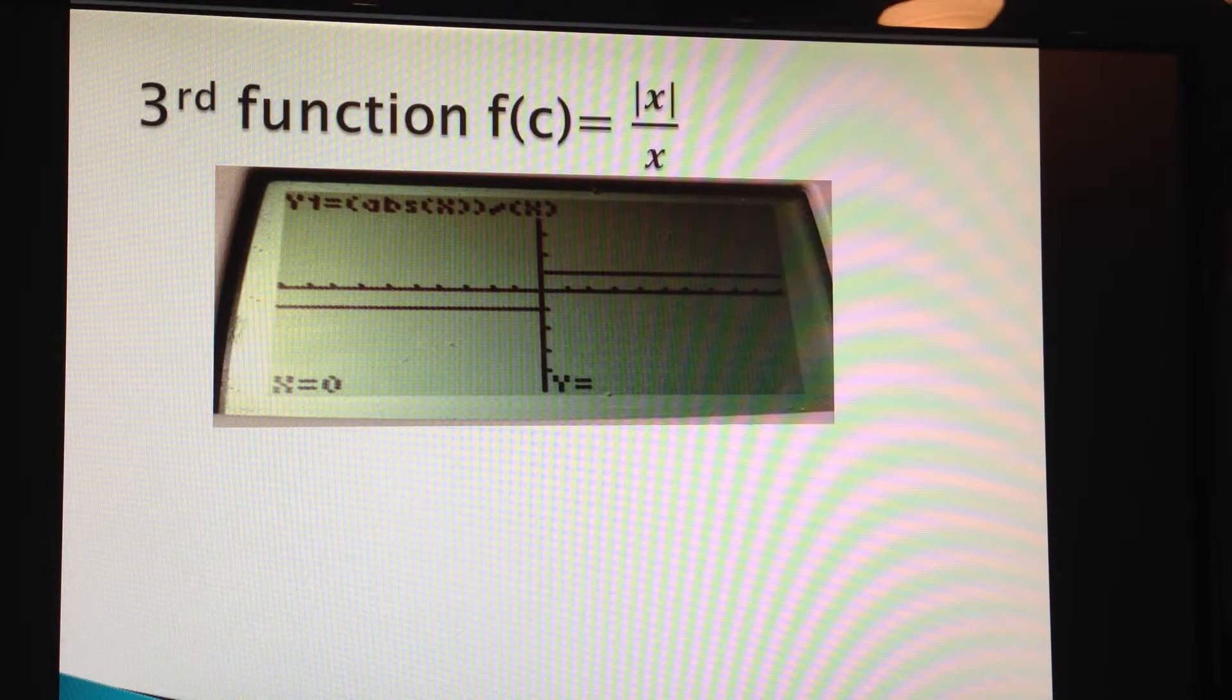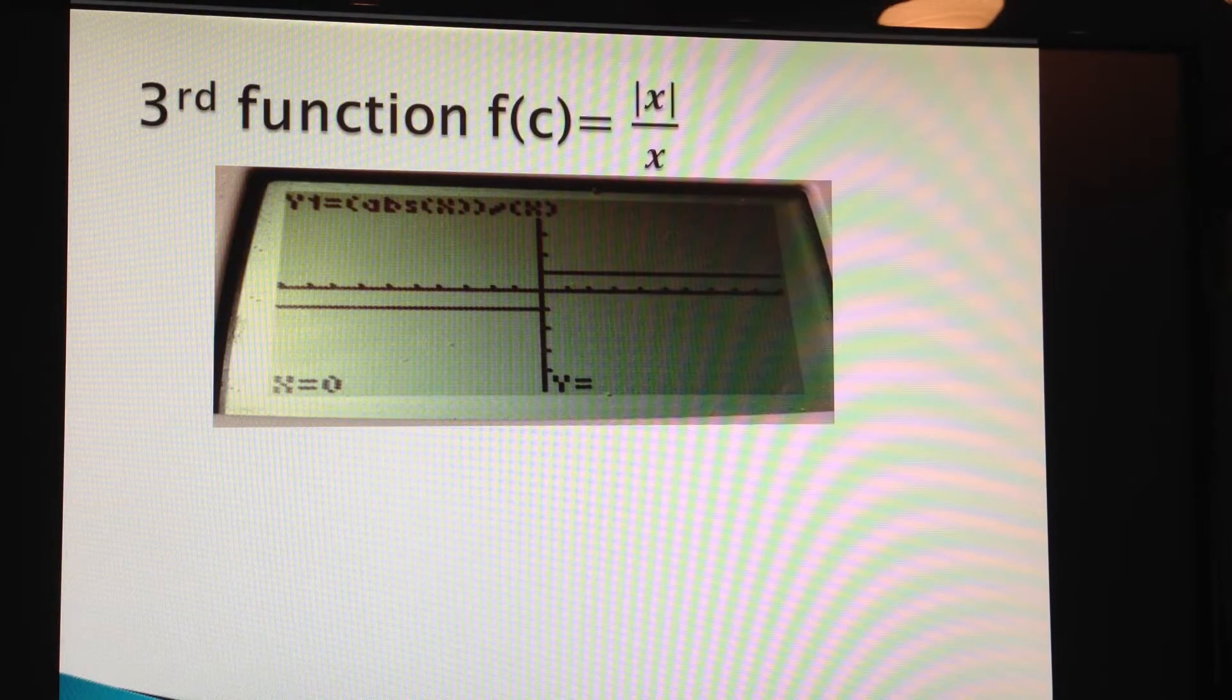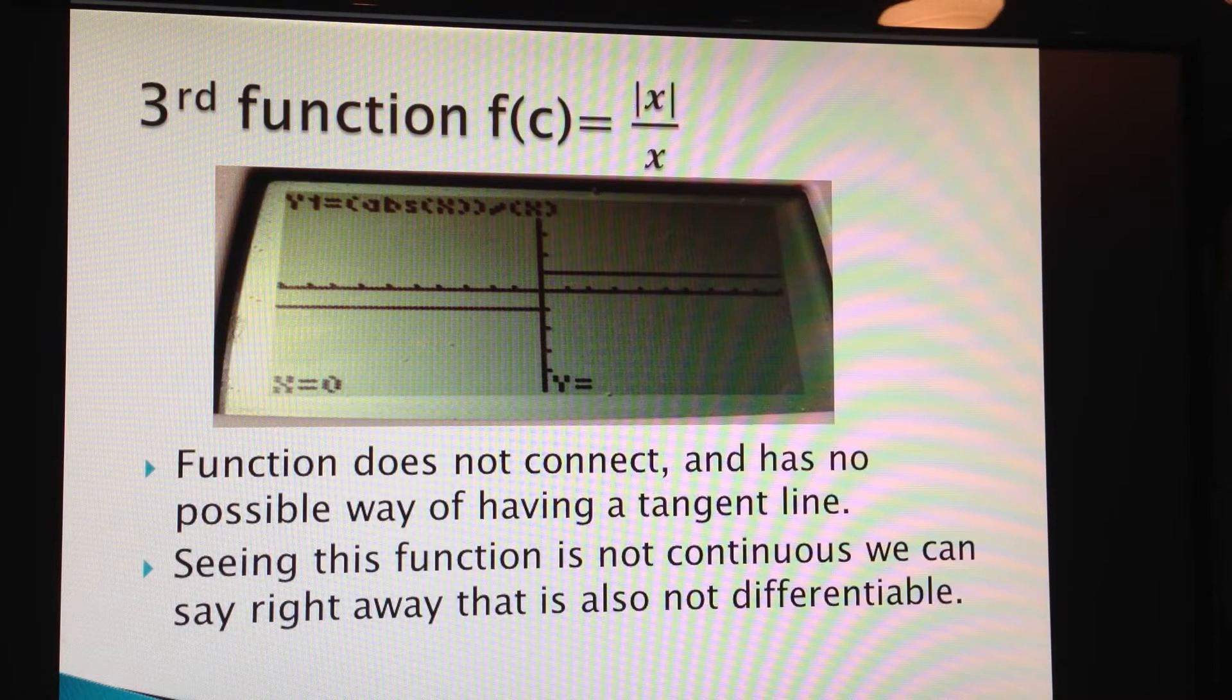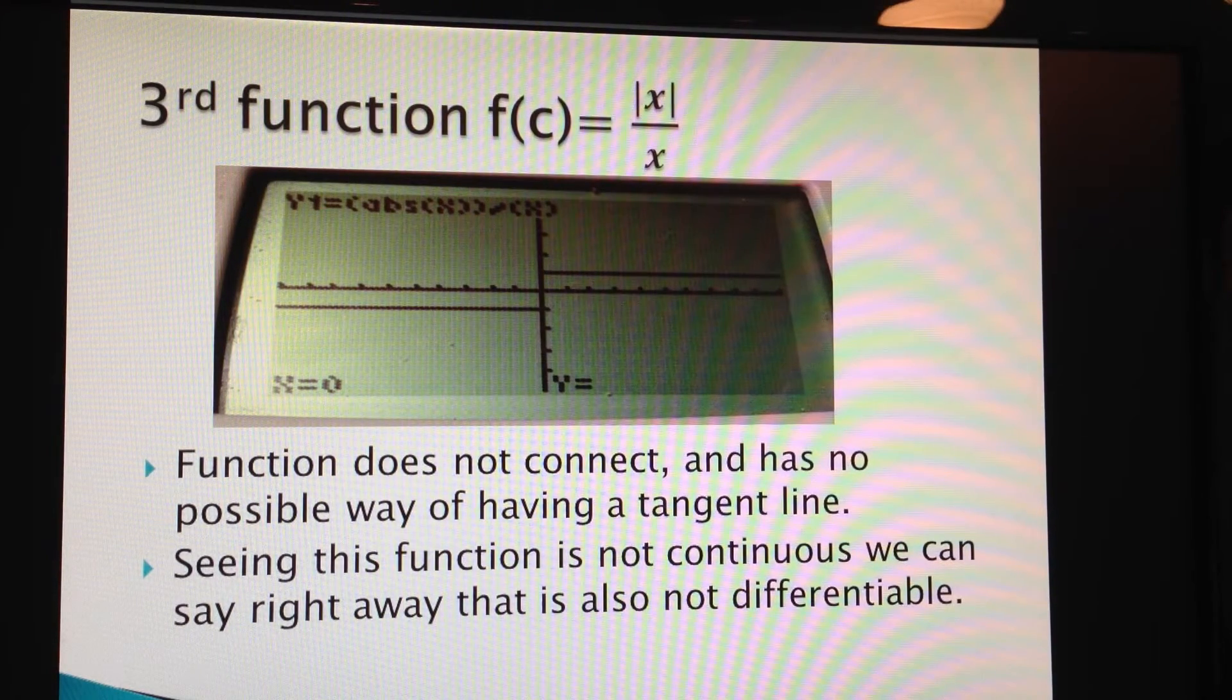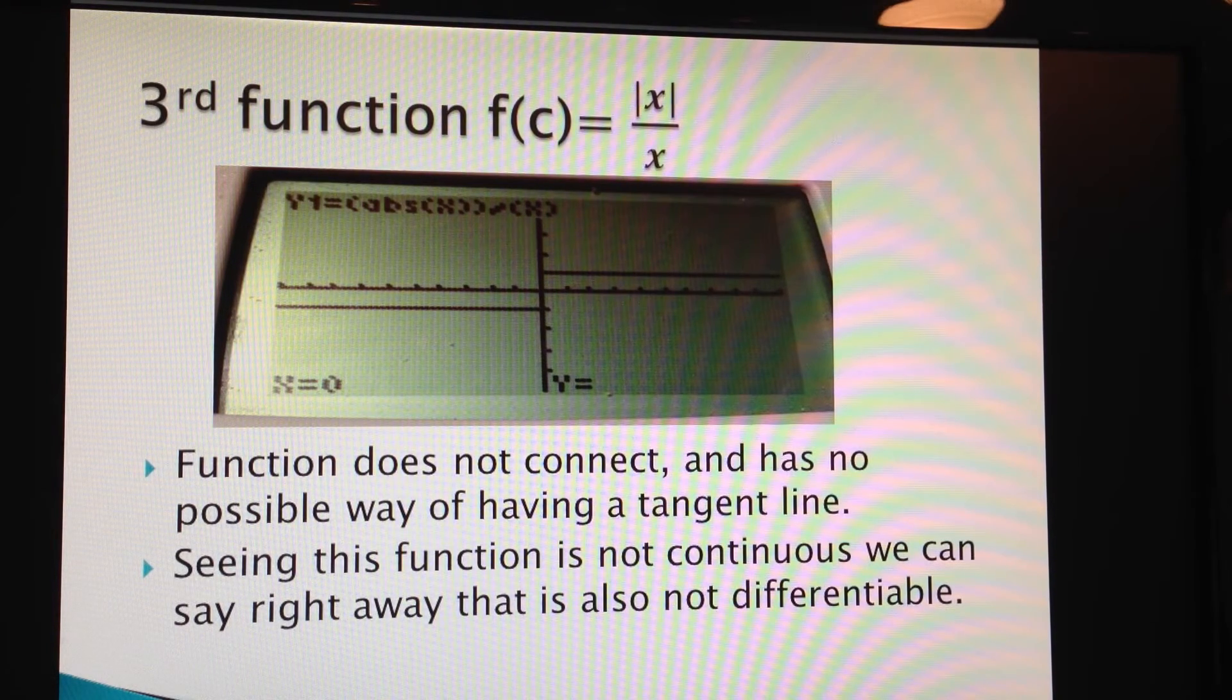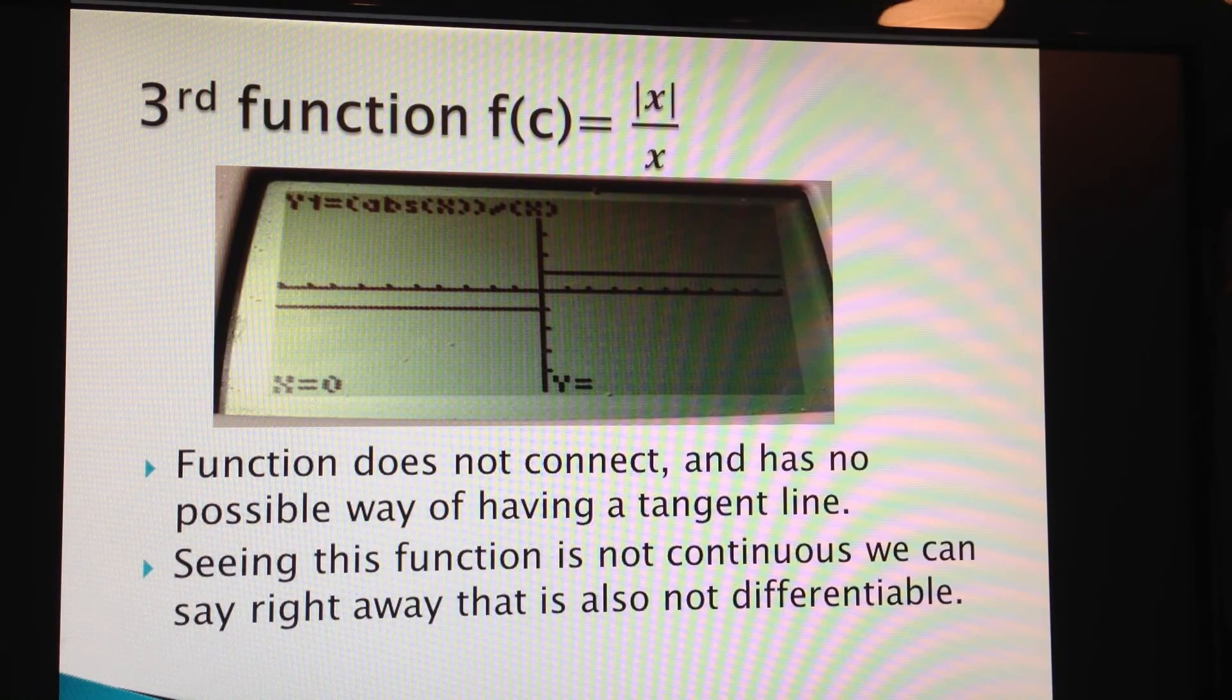The third possible way is f of c equals the absolute value of x divided by x. Right away looking at the graph, we can see that the lines do not meet at all. There's no connection and there's no possible way of having a tangent line. Seeing this function is not continuous, we can also say right away that it is not differentiable.